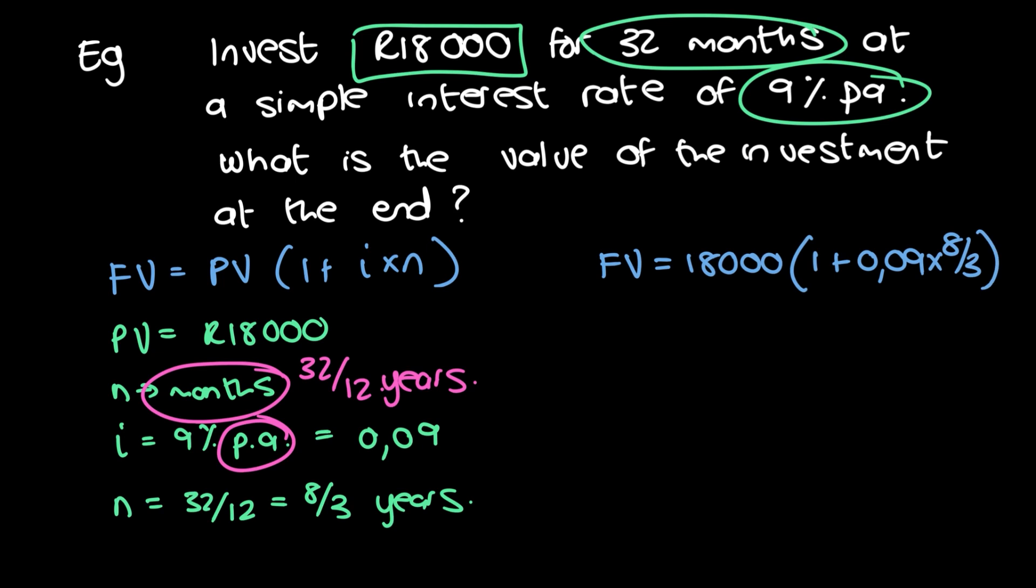And now we can just go ahead and put that in our calculator. And if we do that, we're going to get 22,320 rand. So at the end of the investment period, you would get 22,320 rand out. And how much do you actually earn overall, like what was the interest that you earned? Well, you said 22,320 minus the 18. So the total interest for that period was 4,320. So that's essentially what you made.